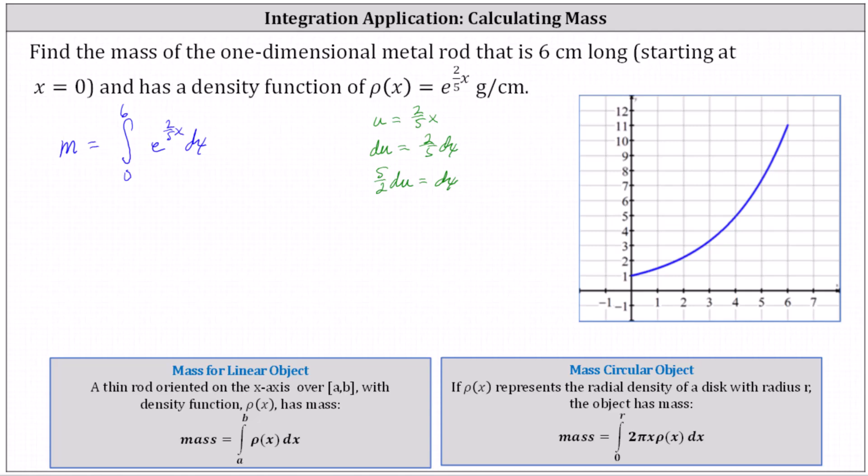And now let's write the integral with respect to u. We need to be careful here. Remember the limits of integration from zero to six are x values, not u values. We need to determine new limits of integration. When x equals zero, u equals two fifths times zero which is zero. When x equals six, u equals two fifths times six which is 12 fifths, which is the upper limit of integration.